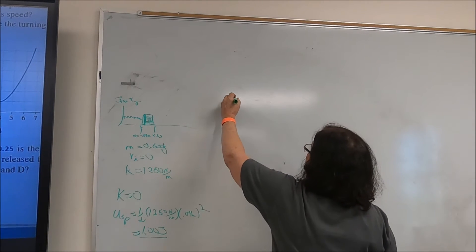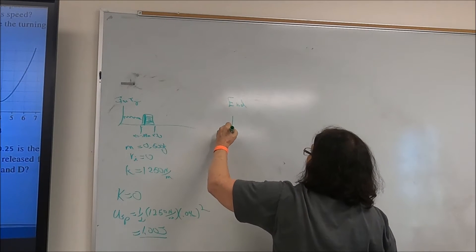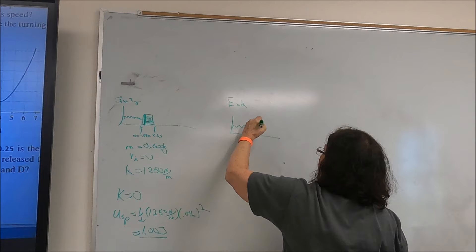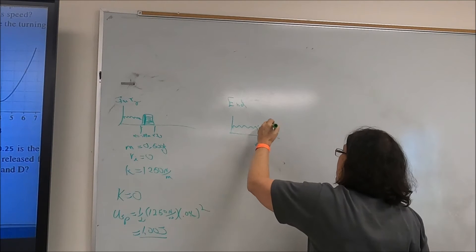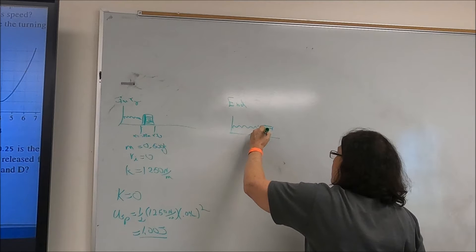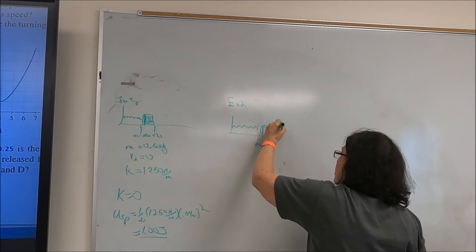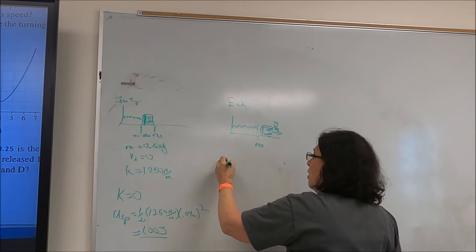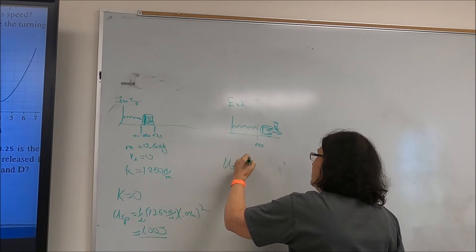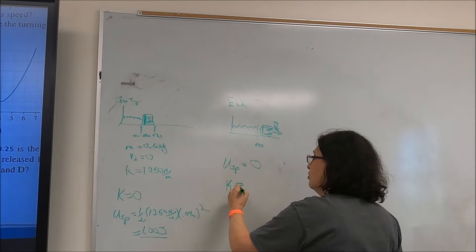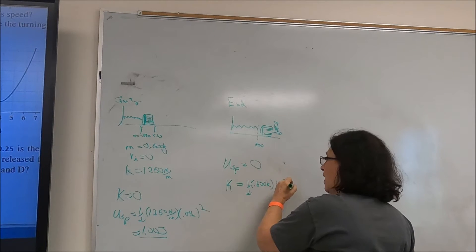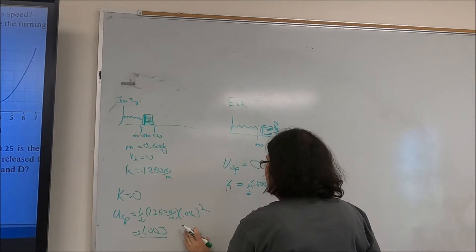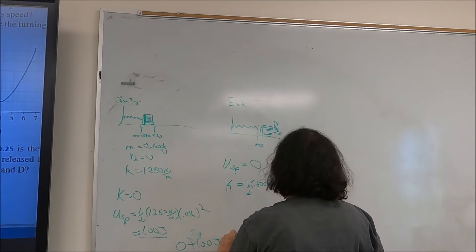At the end, the spring is completely extended at x = 0 (equilibrium point) and the book is sliding away with velocity v_final. The spring potential energy is now zero, and the kinetic energy is ½ × 0.500 kg × v_final². So: 0 + 1 joule = ½ × 0.500 × v_final².